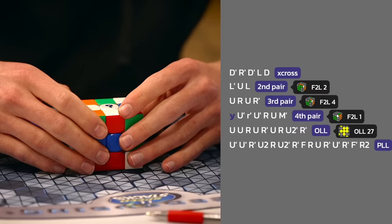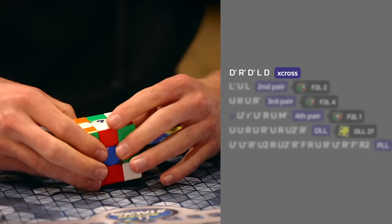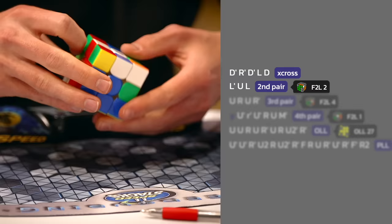But then again, we're in a competition setting, so it's easy to mess stuff up. So let's actually see how I do. I noticed the first two pairs during inspection and because the cross was just RDL moves, the beginning was just super fluent. I inserted my first pair right away, the second pair.